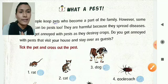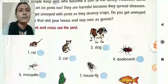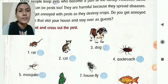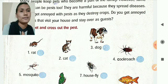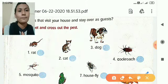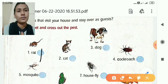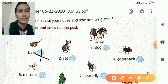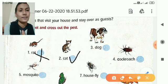Tick the pet and cross out the pest. Here we have to tick who is a pet and cross out who is a pest. You can see one rat — rat is not a pet, rat is a pest. Cat — yes, cat is a pet. They can become part of the family.